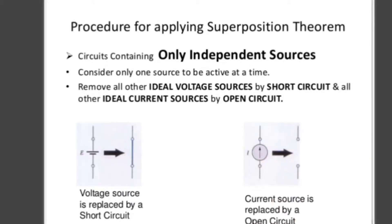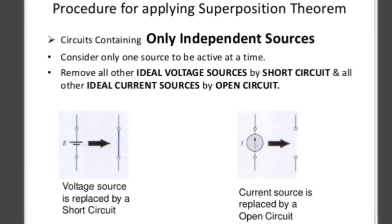Consider a circuit containing only independent sources, not dependent sources. Consider only one source to be active at a time. When one source is active, the removal of an ideal voltage source means it should be short-circuited. A practical voltage source will have some internal resistance placed in its position.